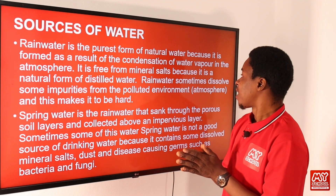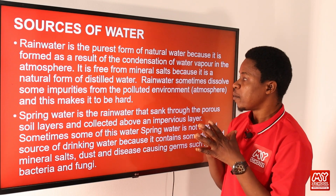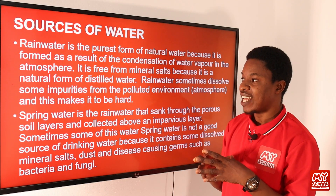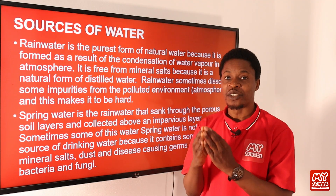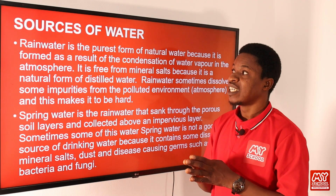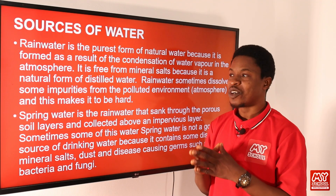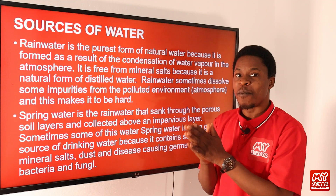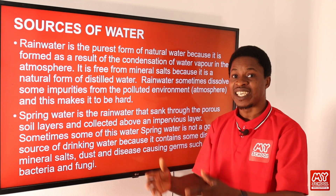Rainwater sometimes dissolves some impurities from the polluted atmosphere, which can make it hard, but that does not change the fact that it is still the purest form of natural water. It is a natural form of distilled water — similar to the water we use for carrying out experiments and analysis in the lab.